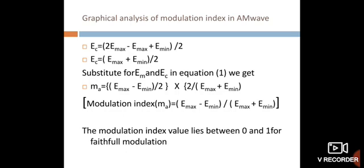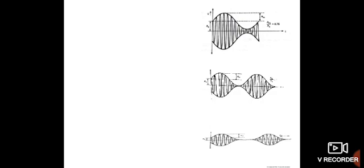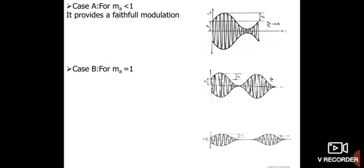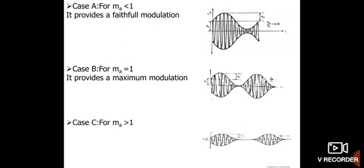The modulation index value lies between 0 and 1 for faithful (good) modulation. In case A, for ma < 1, it provides faithful modulation — good modulation. In case B, for ma = 1, it gives maximum (100 percent) modulation. In case C, for ma > 1, it results in over modulation, and distortion sets in during the reception of the information signal — there is no recoverable information signal.